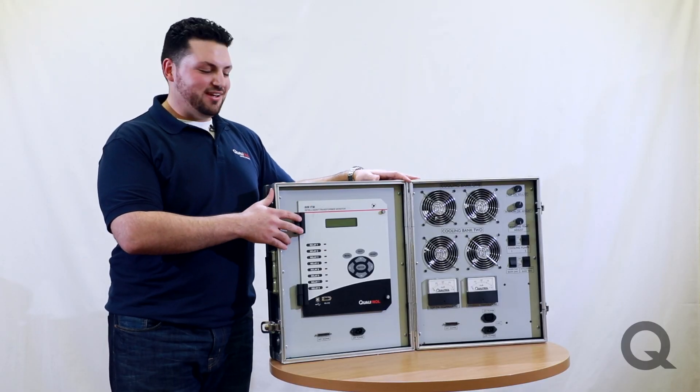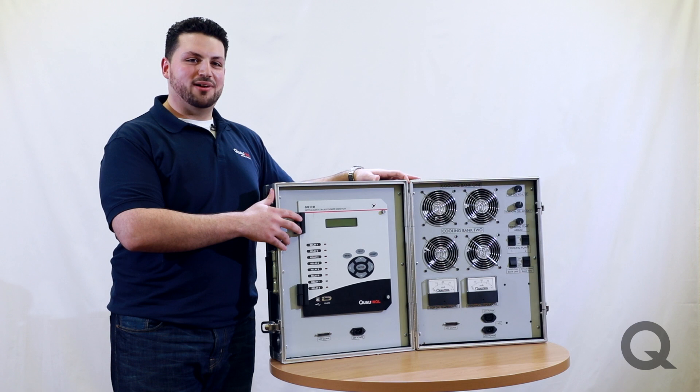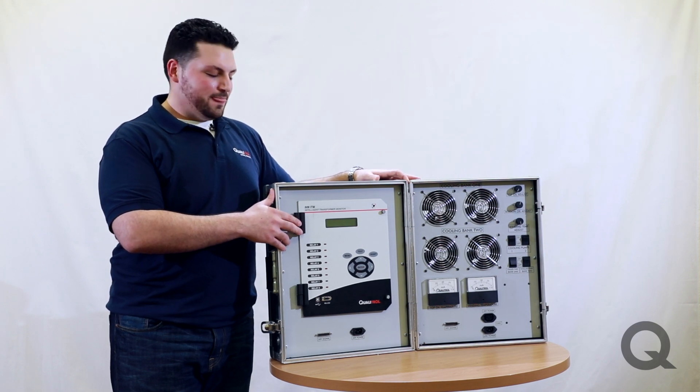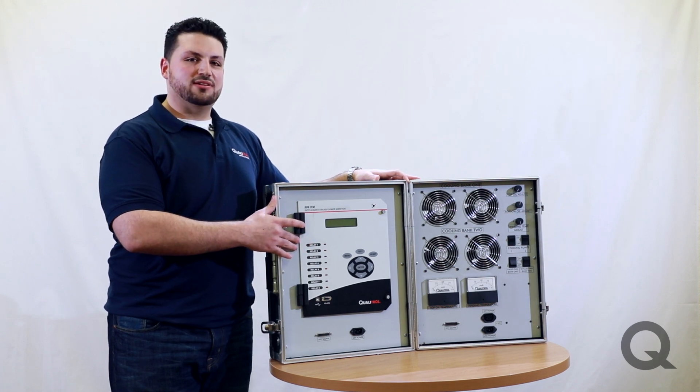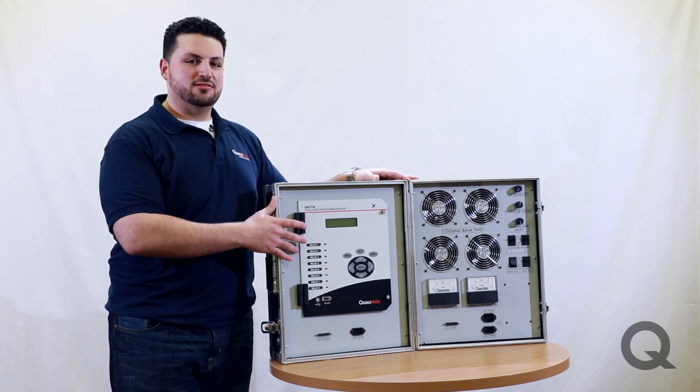With the 509 ITM you also have the option to do real-time direct winding monitoring using fiber optics. This is done with a hotspot module that will be located behind the ITM 509. Typically our customers like to monitor 8 to 16 fibers depending on the application.